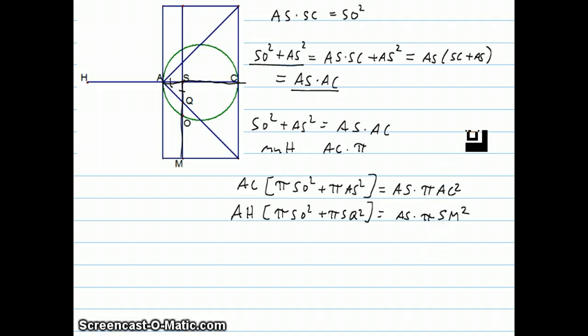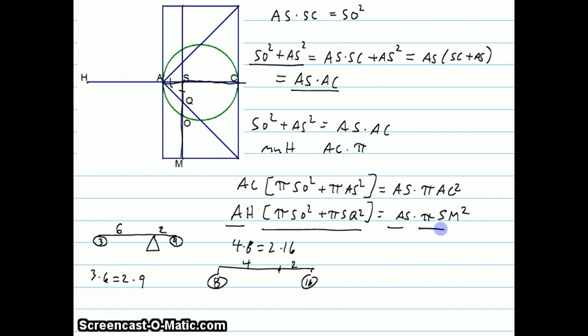Now the law of the lever says that if I have something like this, it means that 3 times 6 equals 2 times 9. But it also works the other way around. Let's say I had an equation like 4 times 8 equals 2 times 16. That would mean that I could take up a fulcrum and split it up so that one length is 4 and one length is 2. And then if I put a 16 pound weight here and I put an 8 pound weight here, that they would balance. Well, this thing has that form.